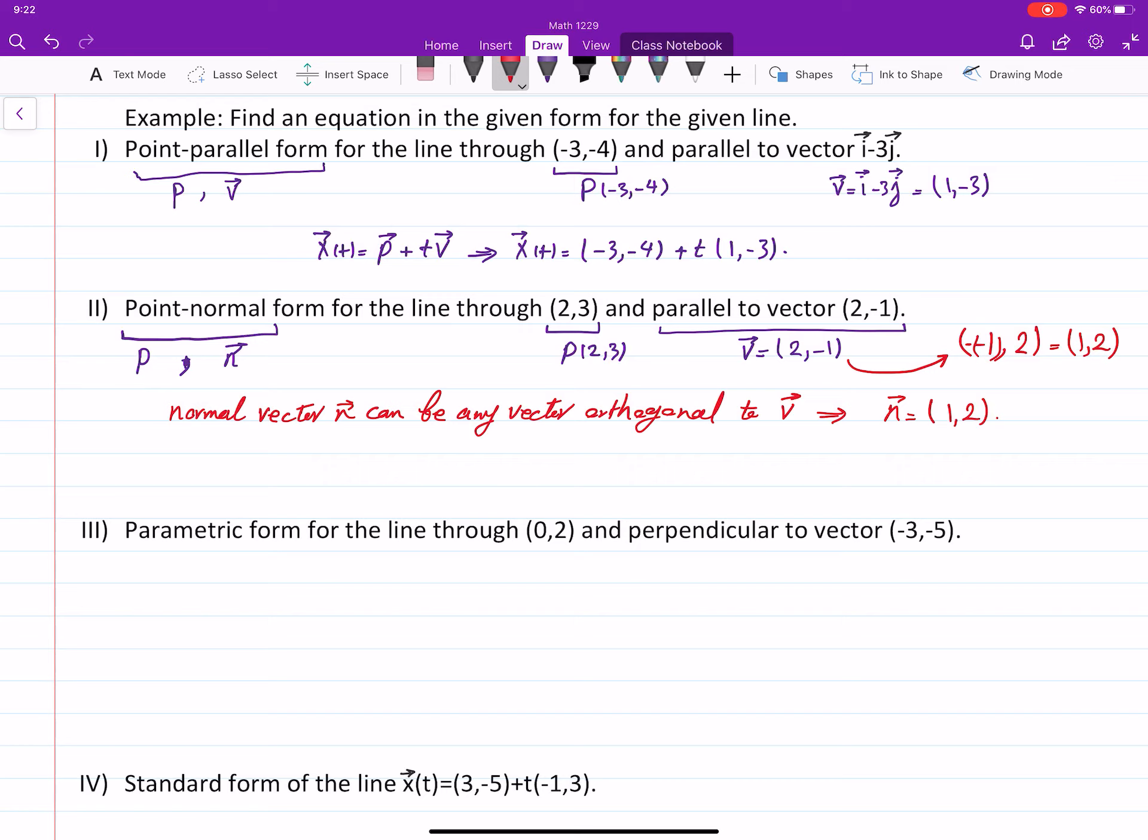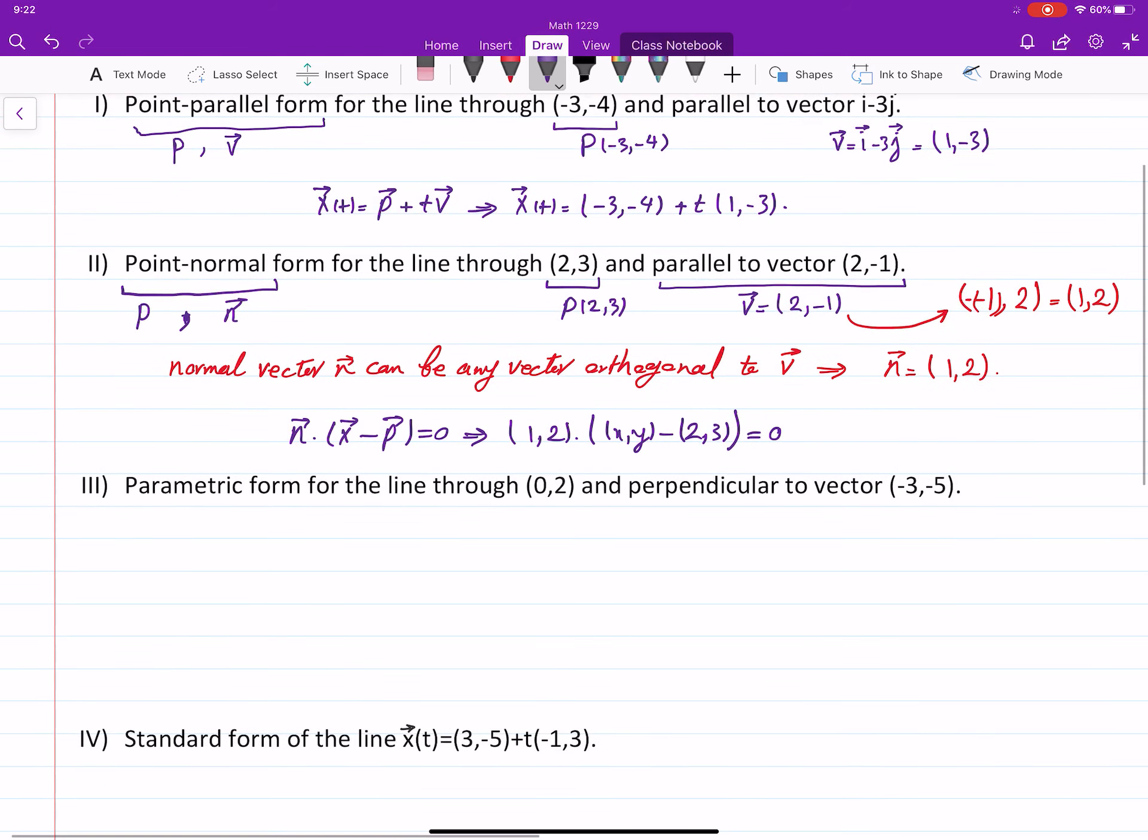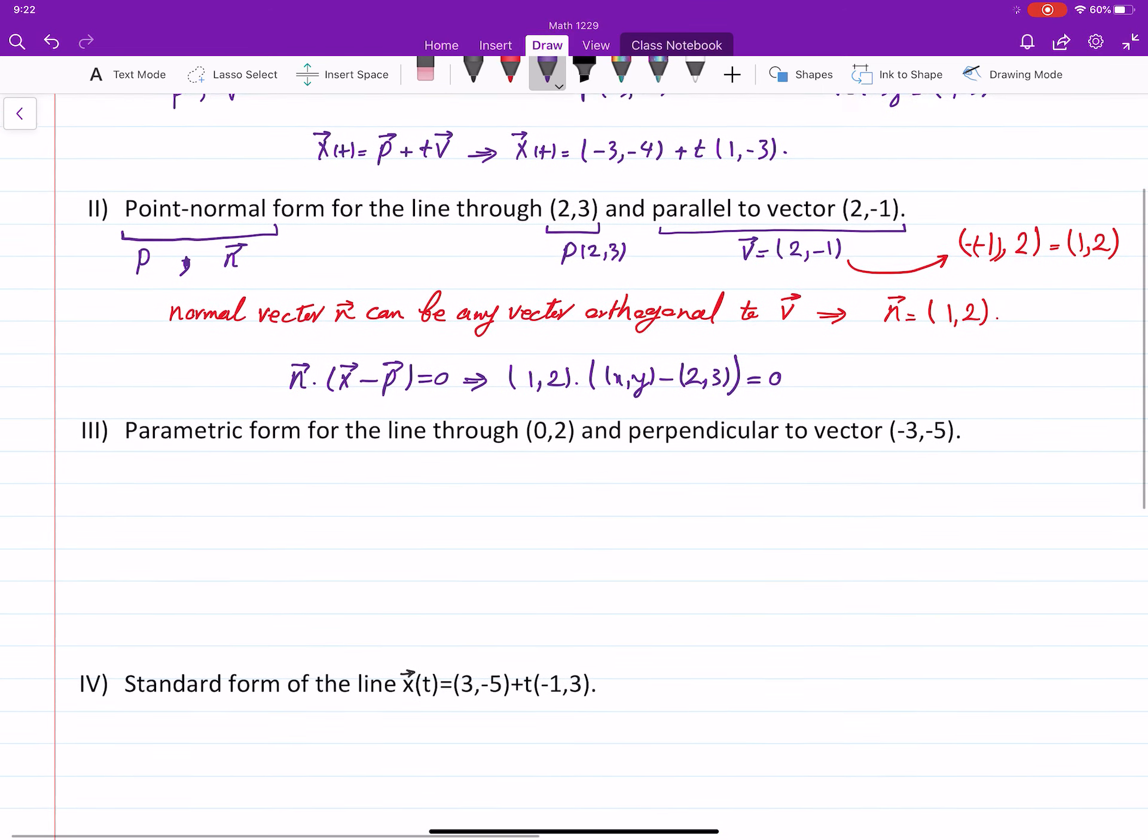And such a vector can be used, in this case, as a normal vector. So then, when we have those ones, we know that we can write now the equation. N dot X minus P is 0. That means that 1, 2 dot X, Y minus 2, 3 is 0. So that's the second one.